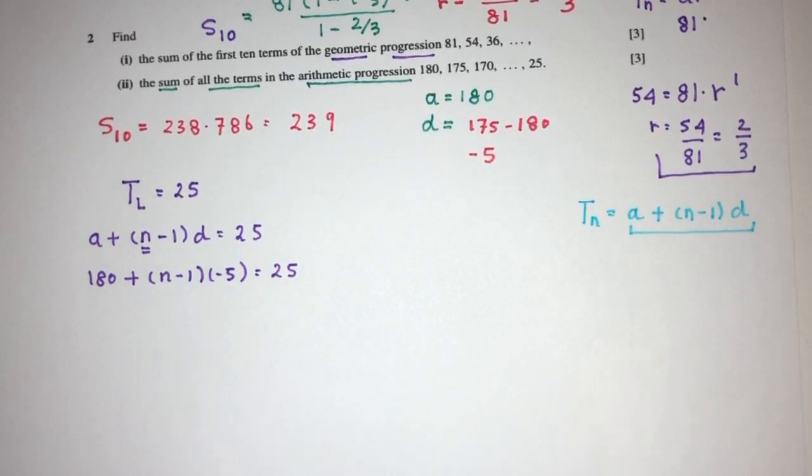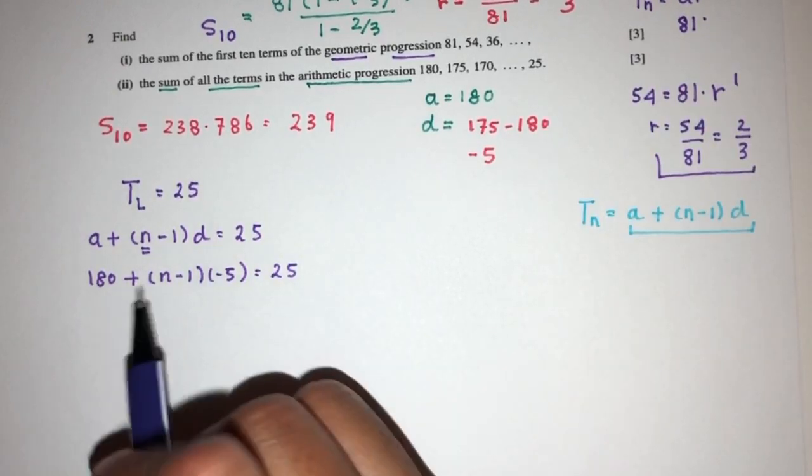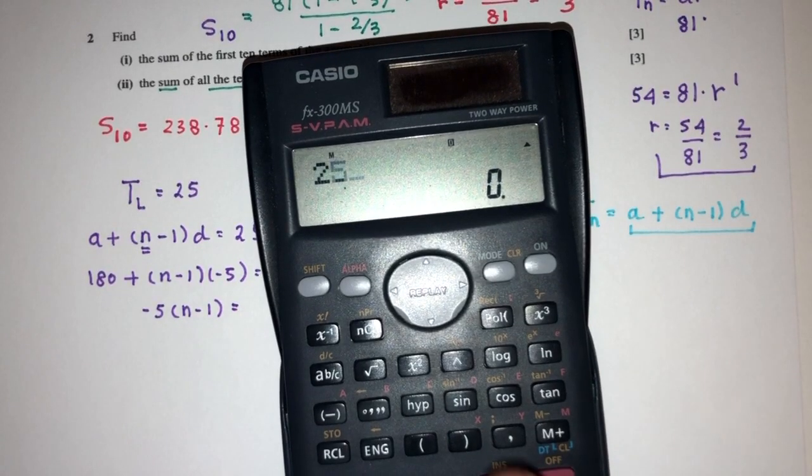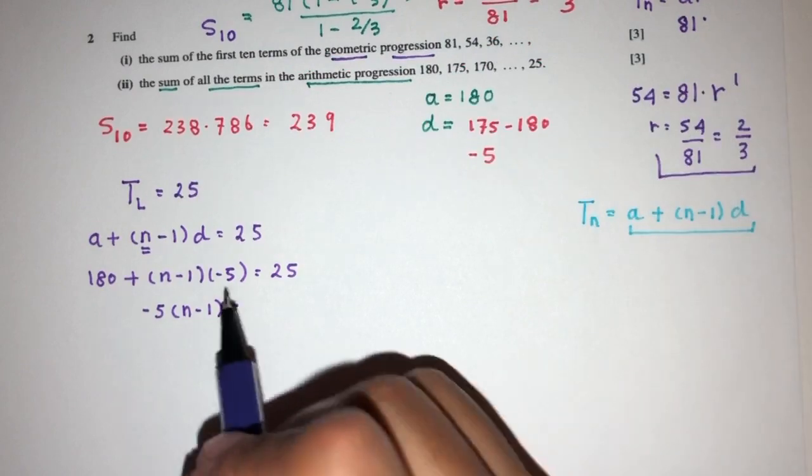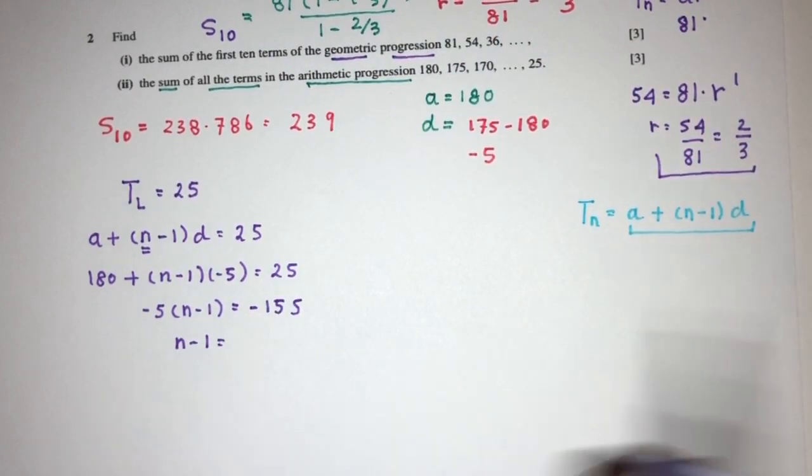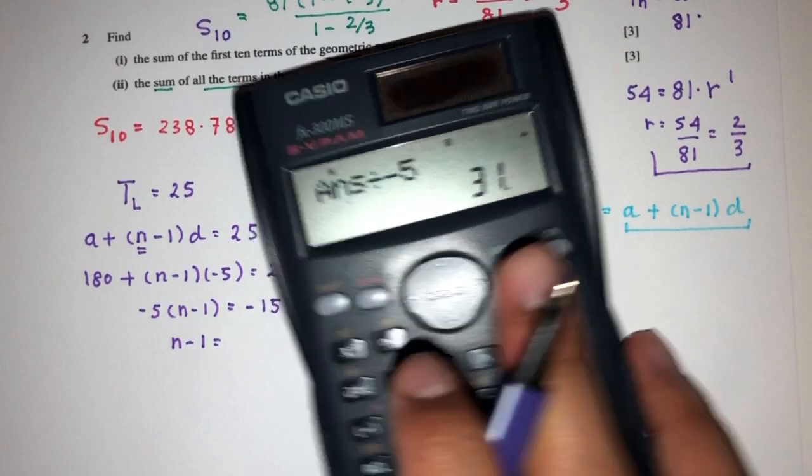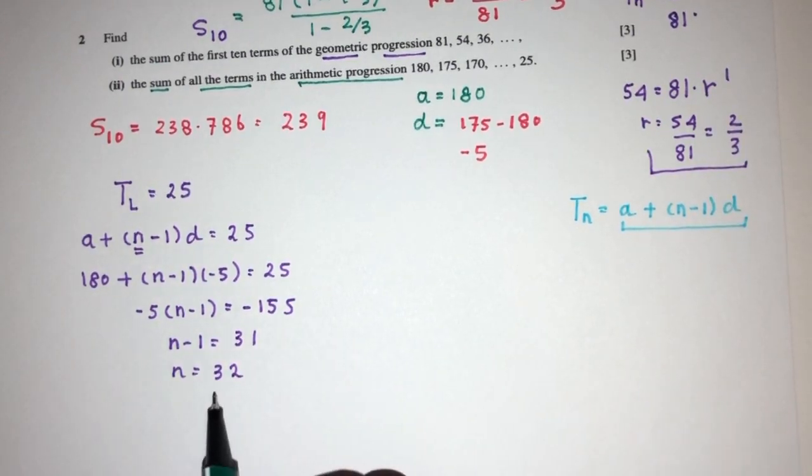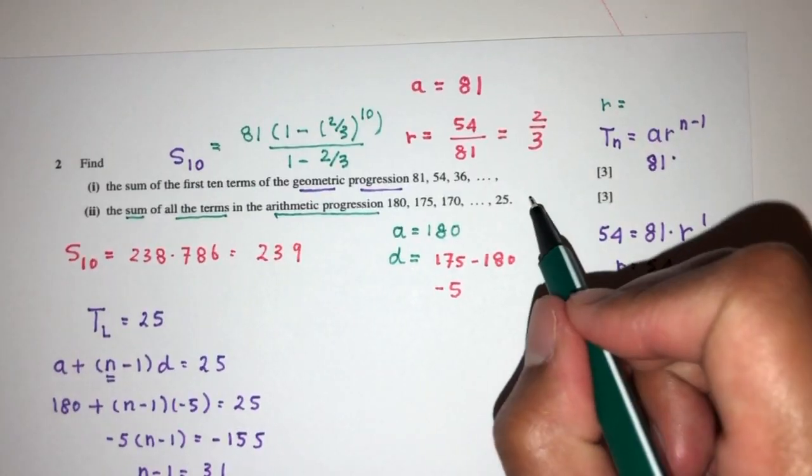That will be 180 plus N minus 1 times minus 5 and that should be 25. Let's see what do we have. First thing first, we can send this over here. So here we have this and that should be 25 minus 180. That should be minus 155. And then n minus 1 should be 155 divided by 5, that should be 31. So finally, n has to be 32.